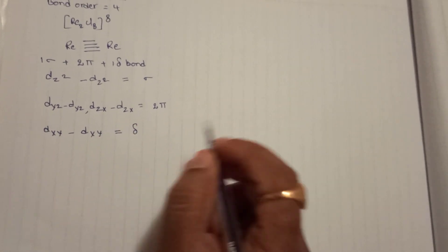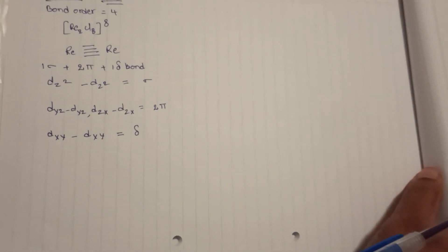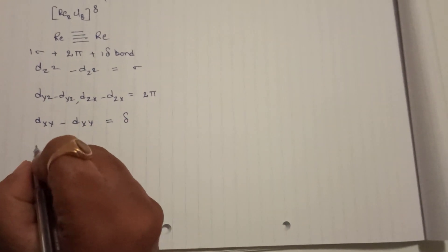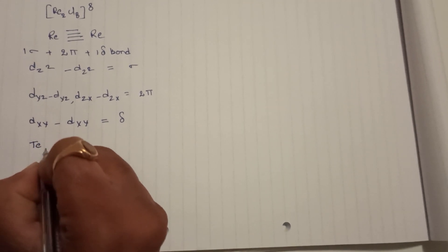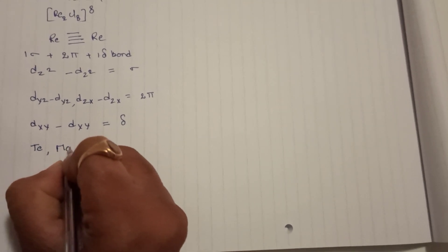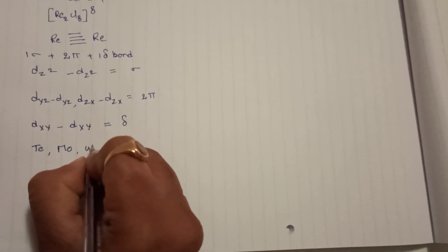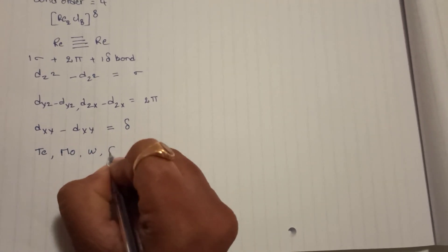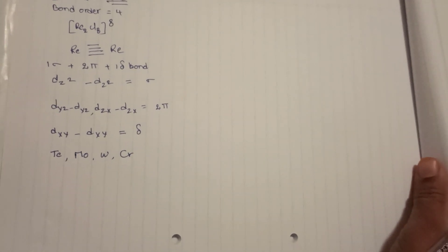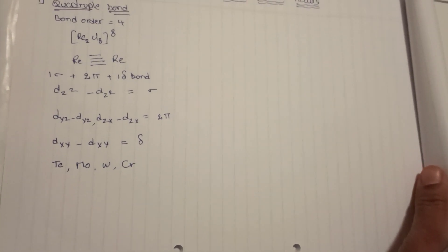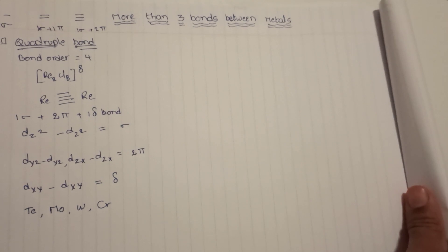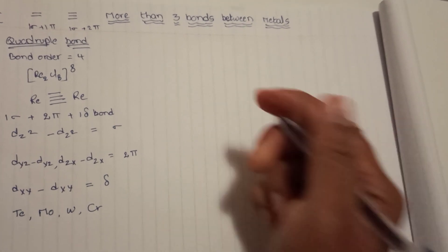These types of bonds are not only found in rhenium clusters; we can find metal clusters with technetium, molybdenum, tungsten, and chromium. These metals generally form quadruple bonds. That is the first type where the bond order is 4.